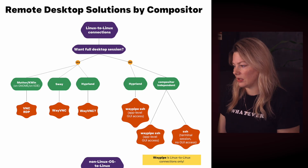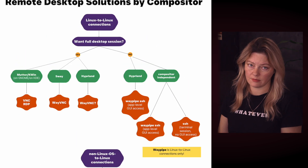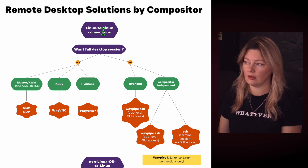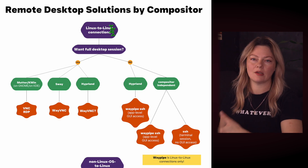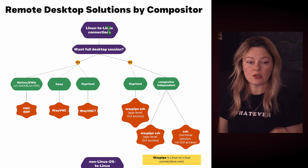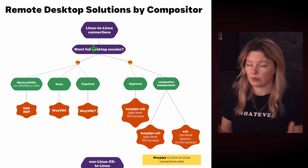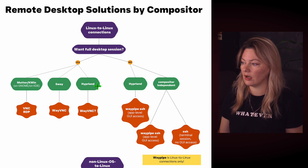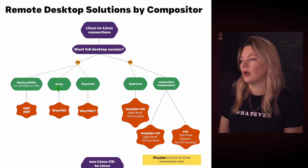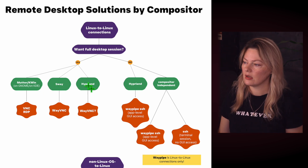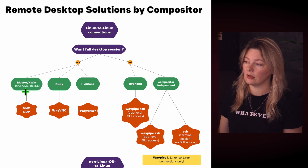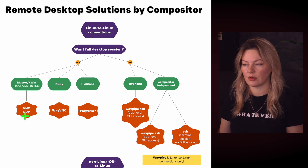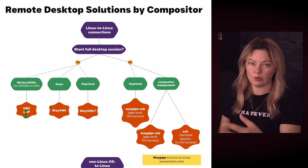Here is the document I put together. The first part is based on the type of operating system you're connecting from — and we're always connecting to a Linux system, since we're interested in connections to Wayland-based operating systems. If you are connecting from one Linux machine to another, the first question is whether you want a full desktop session. If yes, we have a few options separated by compositor. For Mutter or KWin, used in GNOME or KDE, you would use VNC or RDP — third-party tools that help you set up a remote connection to the Wayland machine.